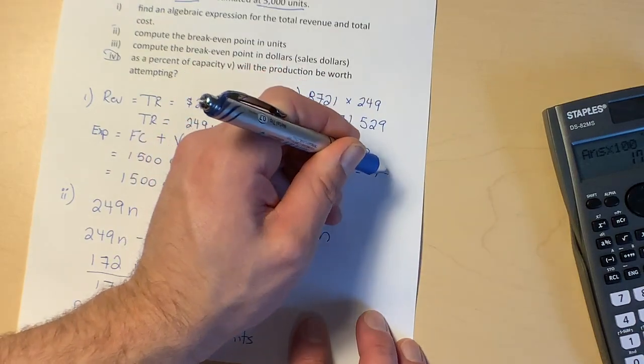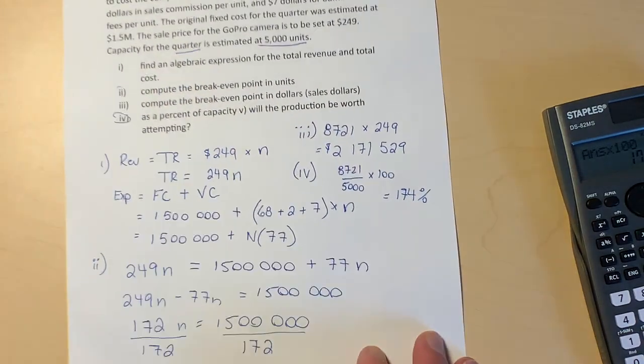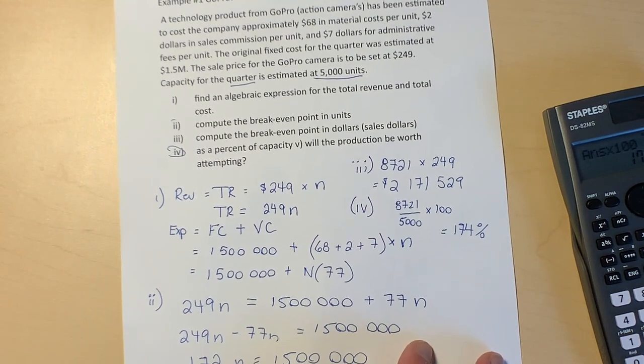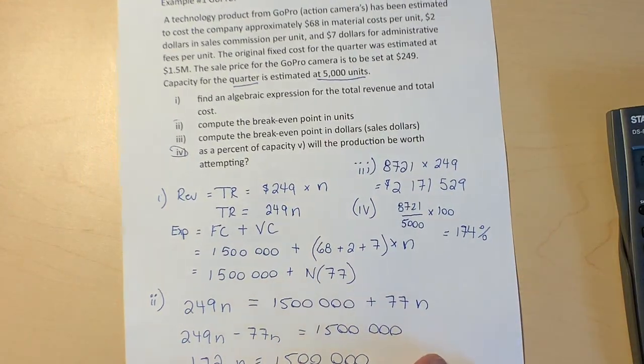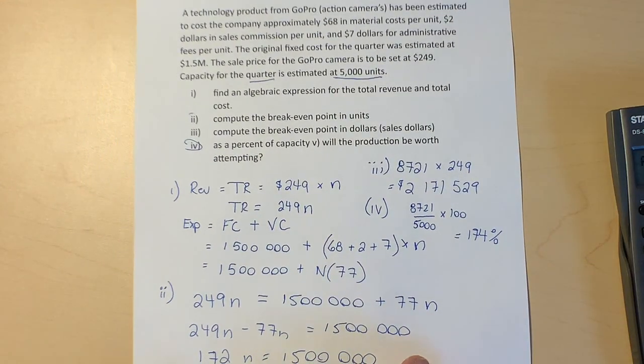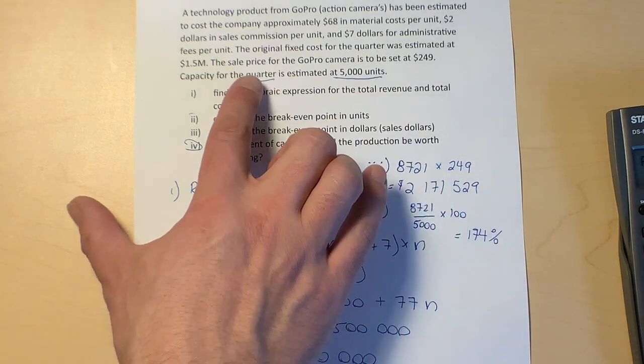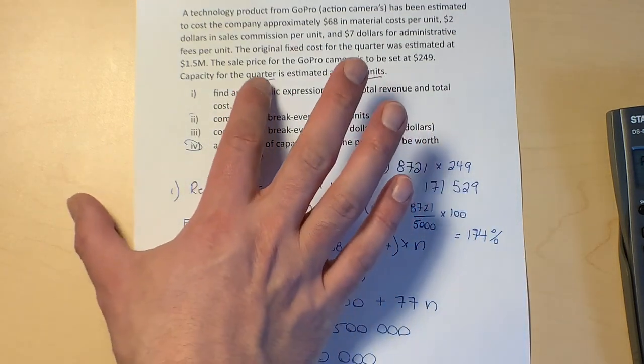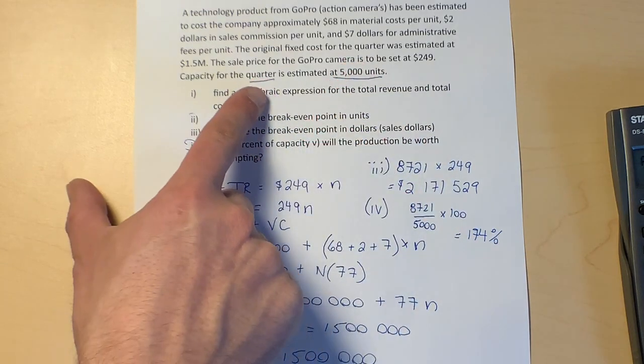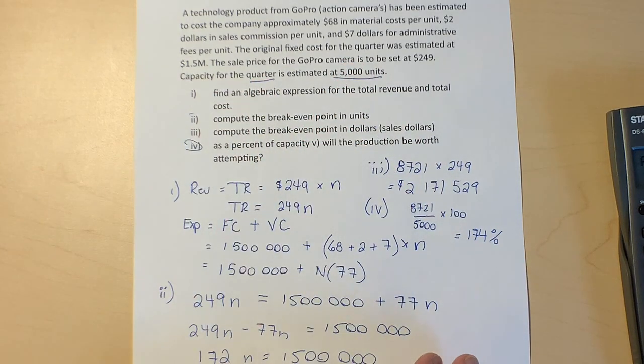And would the production be worth doing? Well, it's up to you. I mean, from a business standpoint, it's going to take a long time to cover expenses. Well, I don't know what a long time is. A quarter is three months, so it's going to take two quarters or at least six months to become profitable. That's not crazy.